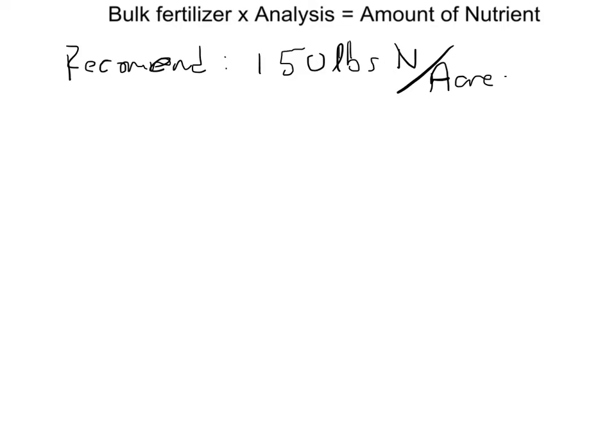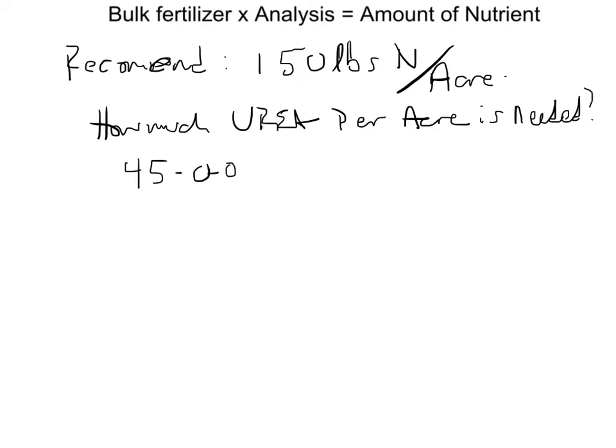So we might ask the question, and if these questions are asked, you'll be given the analysis of urea. So we'll just put down here, urea is 45-0-0. So 45% nitrogen.